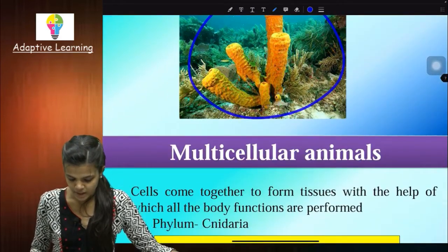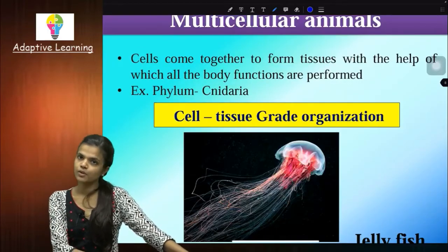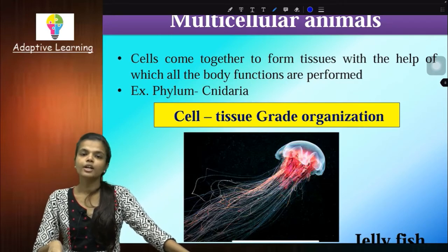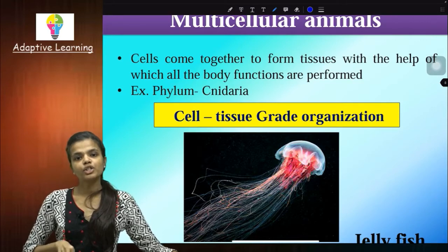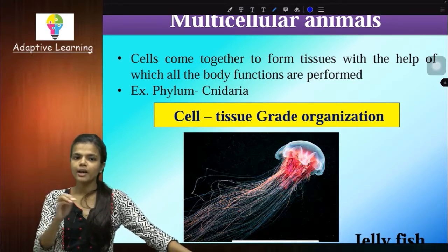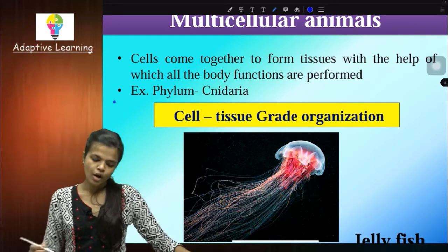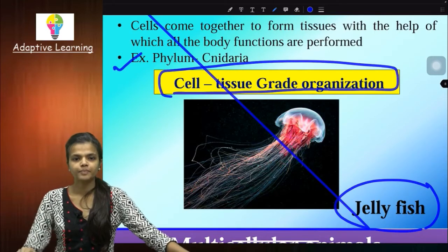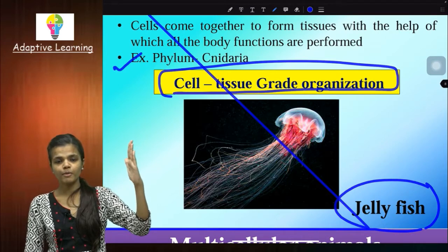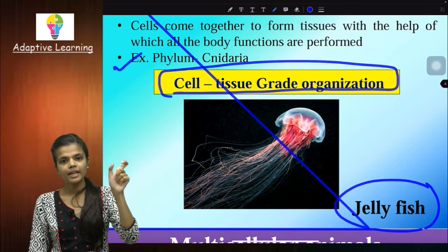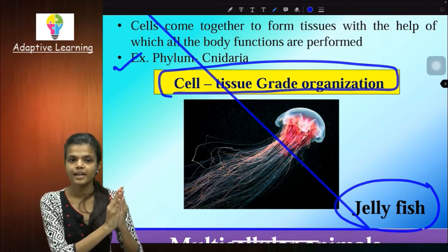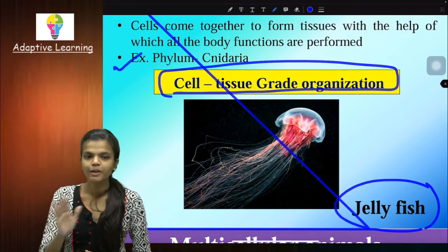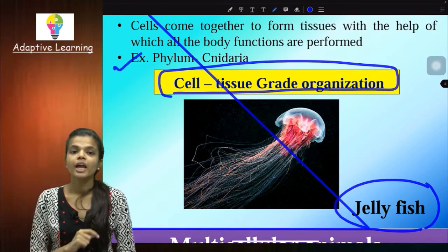Then next. Before we had cells unicellular, then multicellular with cellular grade where cells are together but tissue is not made. Now what will happen? Tissue will be made. There will be body functions but organs are not made. Tissues are present doing different work, but organs are not formed. The phylum is Cnidaria and the example is jellyfish. The grade is cell-tissue grade. First it was cellular, meaning only cells and no tissue. Then cell-tissue grade means cells have made tissue but organs are not formed. Example: jellyfish. Phylum: Cnidaria.